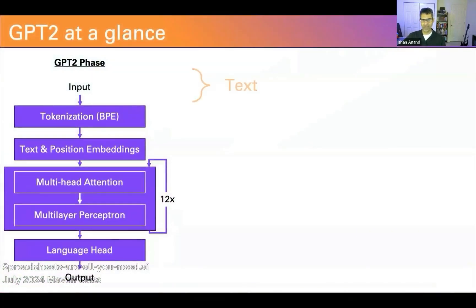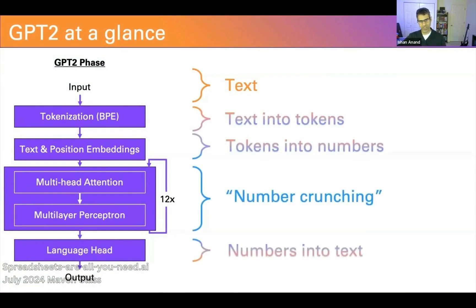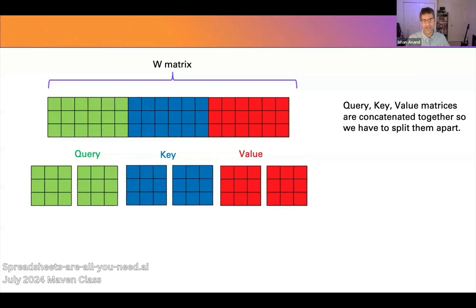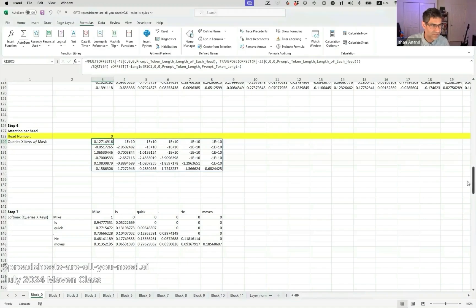Not some toy model, but the full forward pass of GPT-2 — just by going tab by tab through the spreadsheet, providing the conceptual background for each step, and then showing how it gets implemented in the sheet.